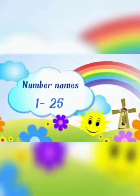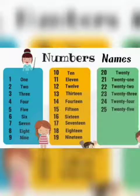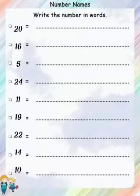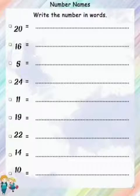Number names from 1 to 25. You can see the number names starting from 1 and ending with 25 — learn them by heart. This is a worksheet and you have to write number names in words for: 20, 16, 5, 24, 11, 19, 22, 14, and 10. Do this activity by yourself.